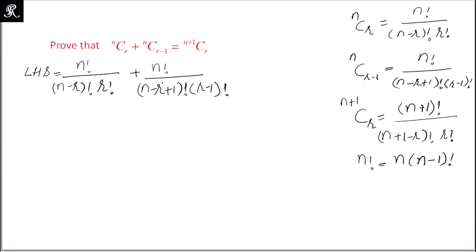So we use n factorial upon (n minus r plus 1) factorial into (r minus 1) factorial. Now in order to simplify this expression we need to do some replacement. We know that r factorial is the greater number compared to (r minus 1) factorial, so we will expand it in order to get similar terms in the denominator so we can take them out as common.